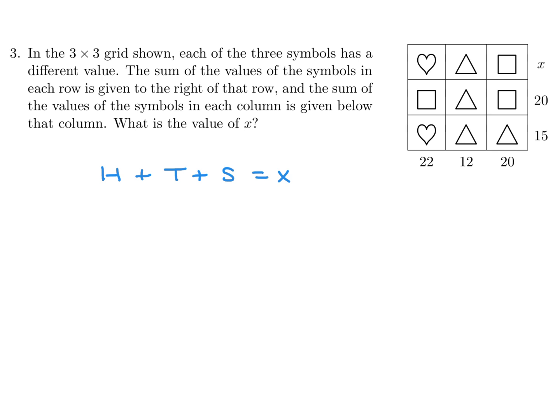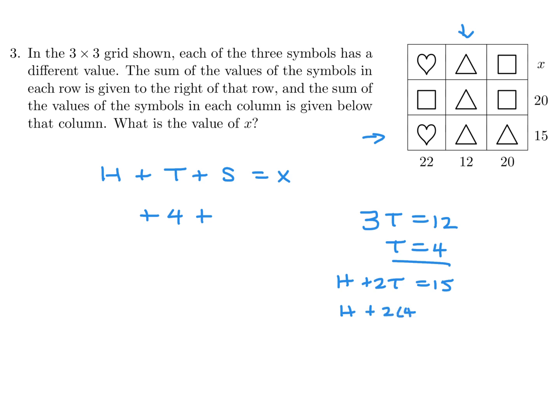Let's see where to go first. One column has three triangles equaling 12, so one triangle equals 4. Then there's a row with one heart plus two triangles equaling 15. Since triangle is 4, that's H plus 2 times 4 equals 15, so H is 15 minus 8, which is 7.